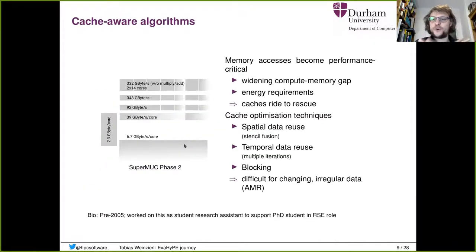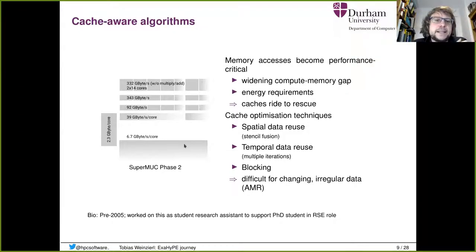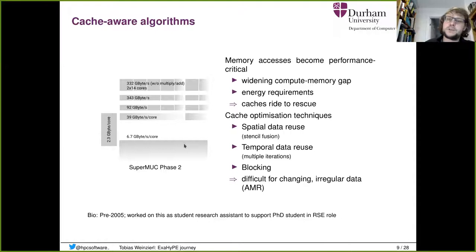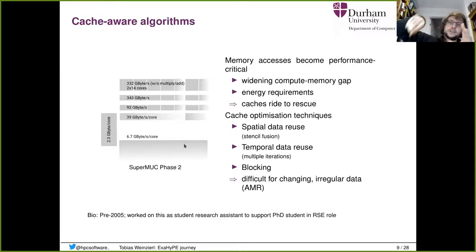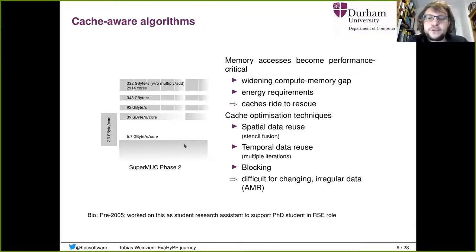This all started pre-2005, when I worked as a student research assistant in Munich at TUM. At that time, people already told you: memory accesses will be the performance-critical thing, because we already saw this widening compute-memory gap. Computers just become exponentially faster and the memory bandwidth just can't keep pace. The data movements also cause the energy requirements — you still find that in the exascale roadmaps. And it was very clear: cache is the rescuer.